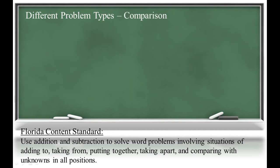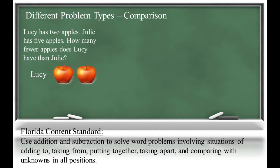The last problem type is comparison problems. These are typically the most difficult types of problems because they involve the comparison of two quantities and the third amount doesn't actually exist because it's the difference between the two quantities. For example, Lucy has two apples. Julie has five apples. How many fewer apples does Lucy have than Julie? To solve this, students will cross off the amounts that are common and the answer will be the difference between the two amounts.